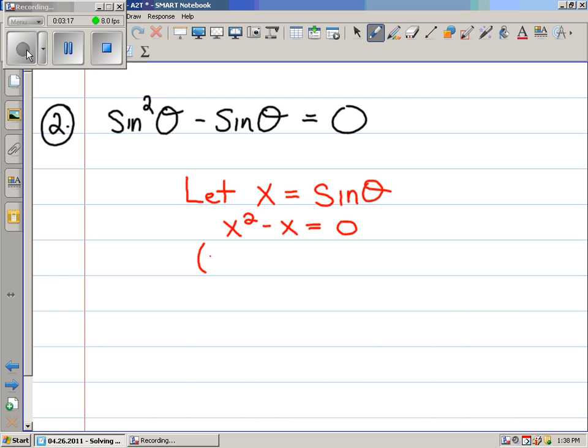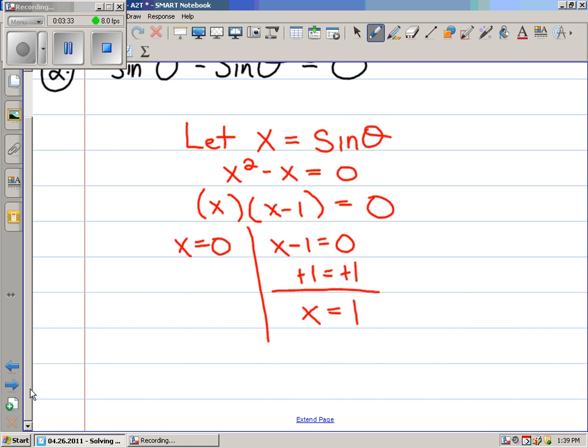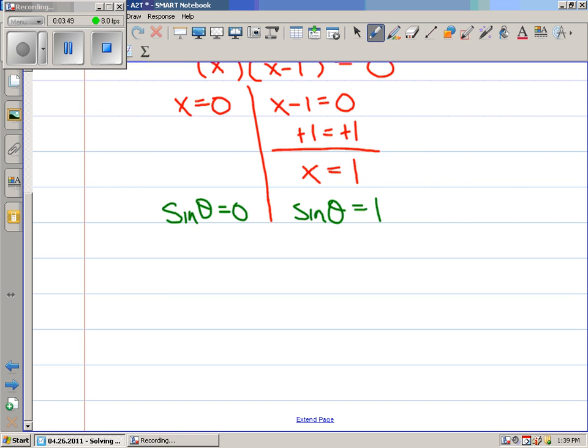Factored. Of course you would have. We're going to solve it. x equals zero. x minus one equals zero. Adding one to both sides. And then look, you've solved it. Now convert back. So you have the fact that the sine of theta equals zero. And the sine of theta equals one. So here it is. It's like two for one. You know what I'm saying?